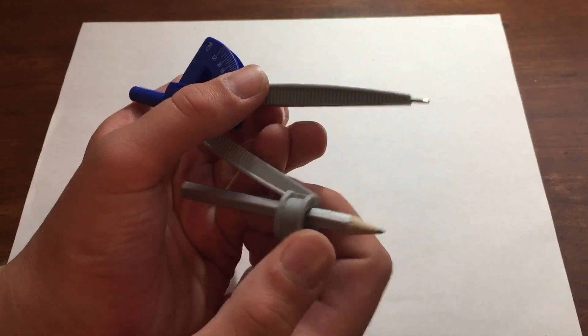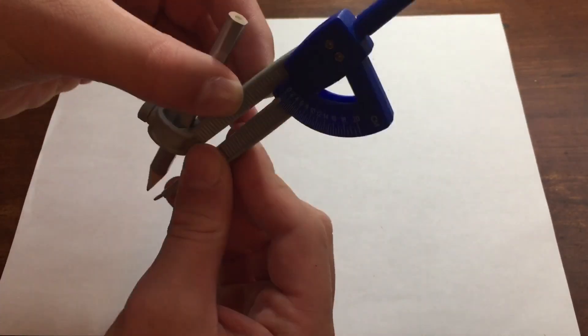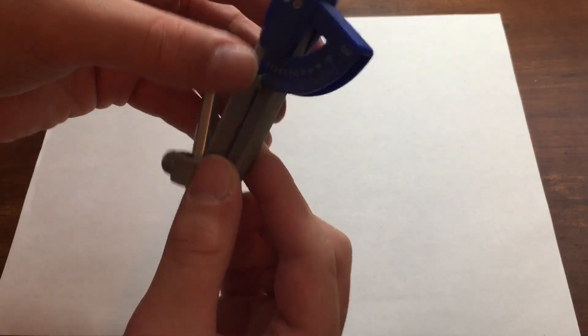It comes with a pencil. So, we first need to figure out how big we want our circle to be.